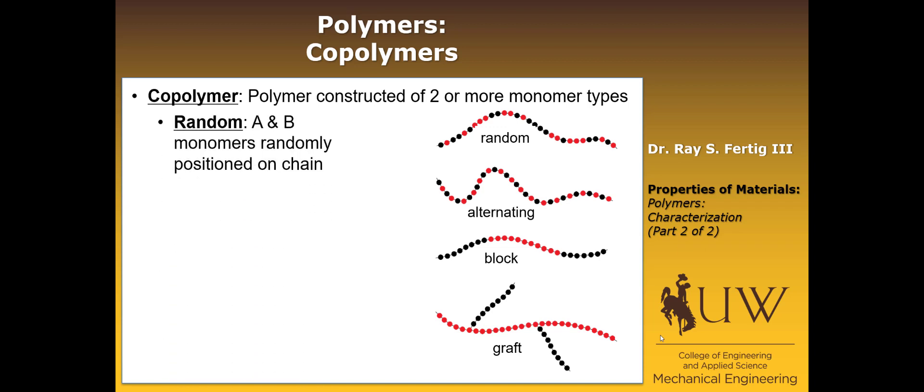And so there are basically four categories that we want to be familiar with of copolymers. One is the random one, which is just the A and B monomers are randomly positioned in the chain. The other is alternating, where A and B are going to exactly alternate along the chain to form the polymer as a whole.